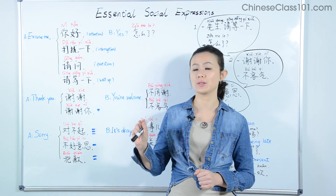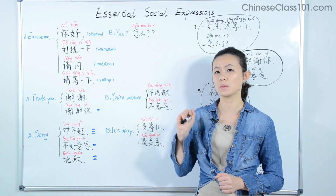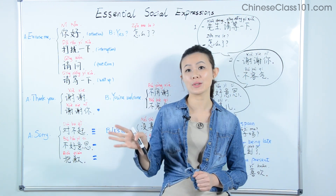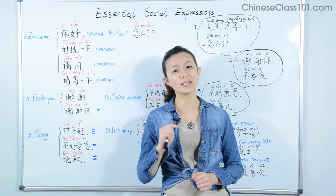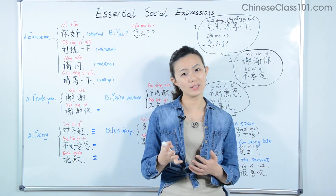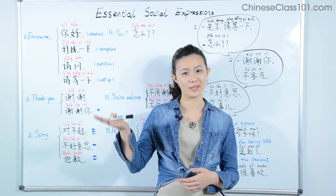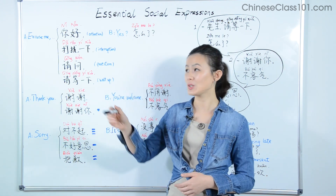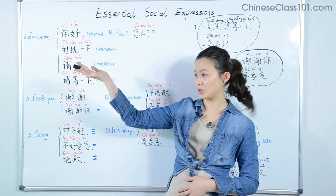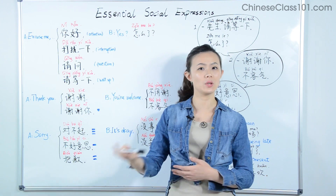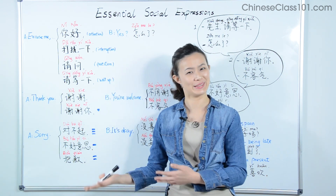To say 'excuse me' in Chinese, it really depends on the social context. For example, when we have to get someone's attention — like in a restaurant — a very polite way is simply to say 你好, like saying hello. So 你好 can be used to get someone's attention, and then you tell them what you want: 你好, 我要这个, 这个 — I want this and this.